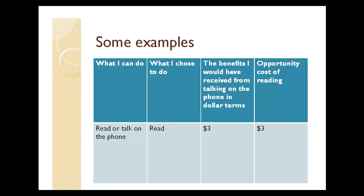Now let's look at things in dollar terms. Again, let's suppose that what I can do is read or talk on the phone, and I make a choice — I choose to read. The benefits I would have received from talking on the phone in dollar terms, let's say, is three dollars. In other words, someone asks me: did you receive any benefits — would you have received any benefits from talking on the phone?